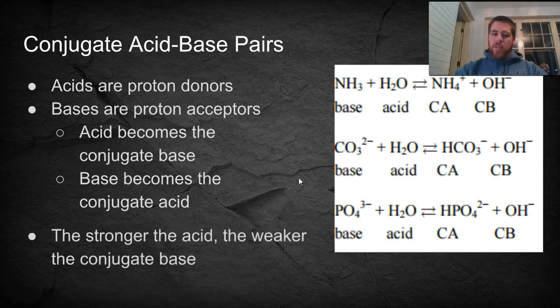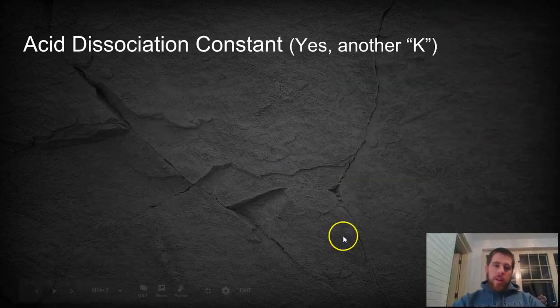The stronger the acid, the weaker the conjugate base, and the inverse is also true. So if NH3 is a weak acid, which it is, because it's not a hydroxide, then that means its conjugate acid is relatively strong, meaning it gives off its proton relatively easily.